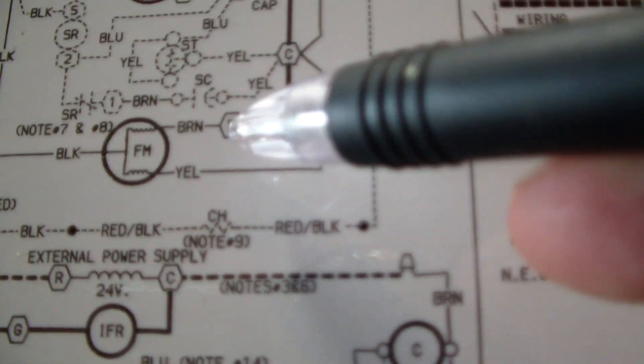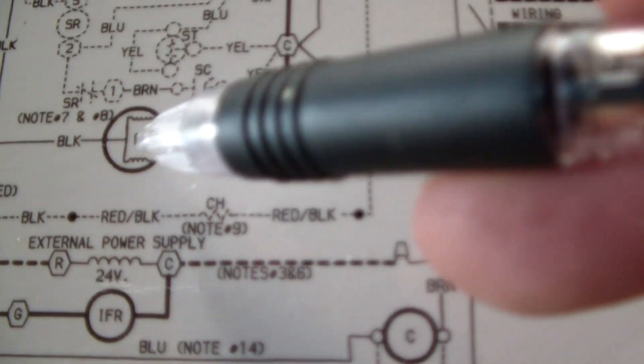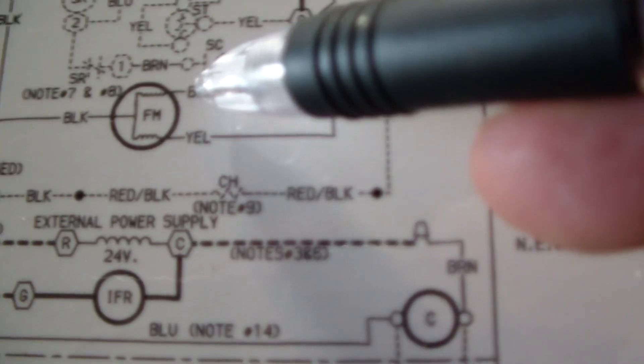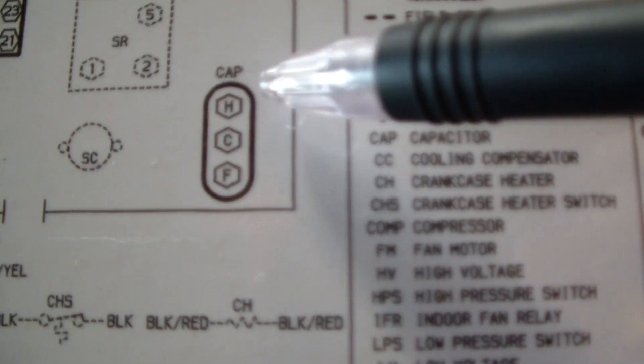So F, which stands for fan, goes to FM - fan motor. It's got one brown wire here. And going back on the parts placement, we can see where it shows an oval dual capacitor with H, C, and F.